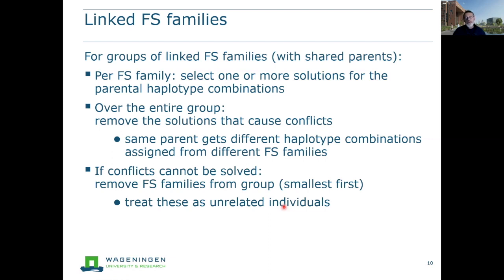Sometimes we cannot resolve such conflicts, and in that case we start to remove full-sib families from the group — starting with the smallest full-sib family, because the smaller the family the less information is available for estimation. If we remove a full-sib family, we treat it as unrelated individuals. This can happen if one of the parents has incorrect SNP dosage information, in which case it's impossible to find a solution.